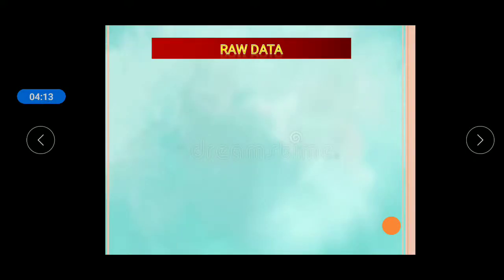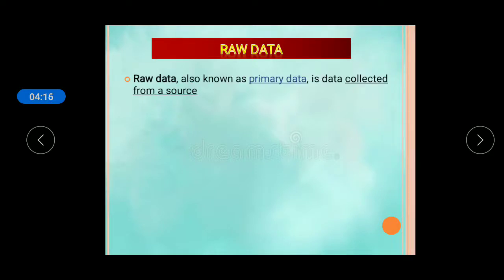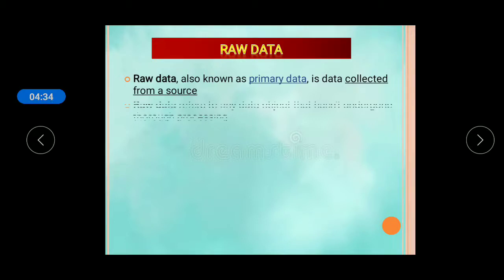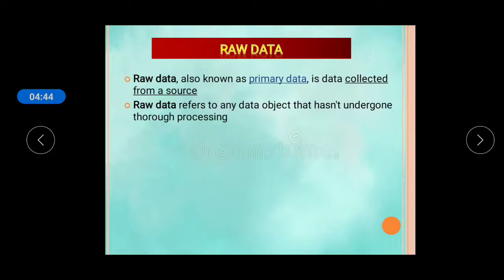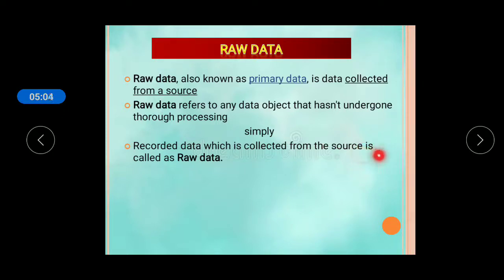Raw data is also known as primary data. It is data collected directly from a source — for example, students or patients with a particular disease. Raw data refers to any data object that has not undergone processing. Simply put, recorded data which is collected from the source is known as raw data.